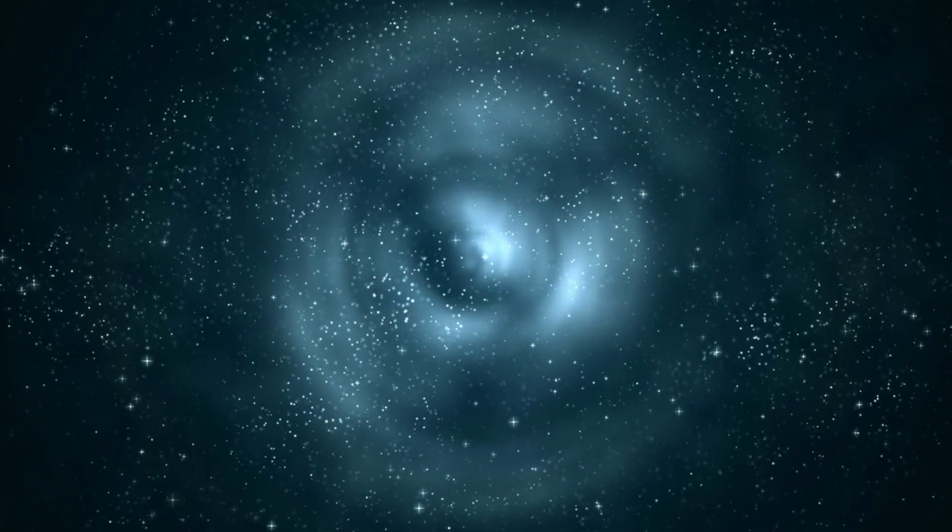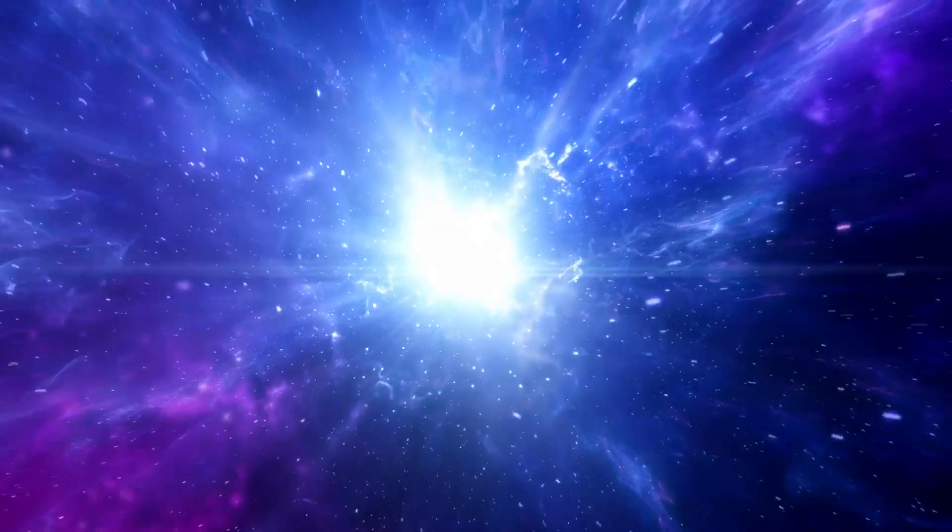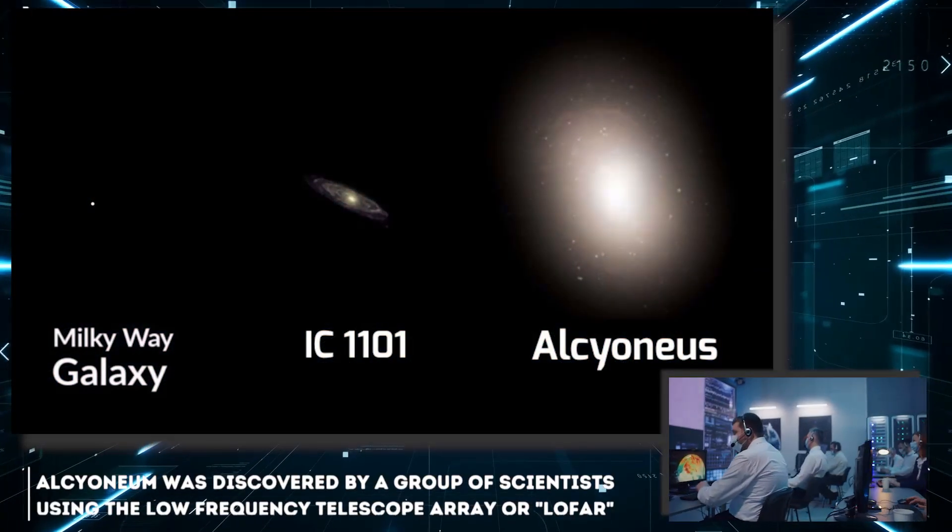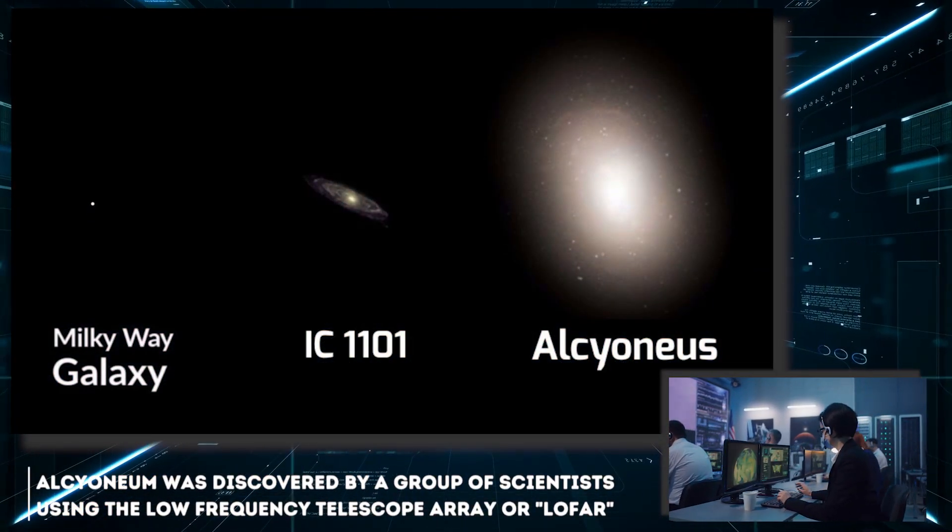Simply put, the galaxy is an ecosystem in itself where a constant cycle of creation and destruction is repeated and respected. At the time, Alcinean was discovered by a group of scientists using the Low Frequency Telescope Array, or LOFAR. This is an array of variable frequency telescopes spread across Europe.